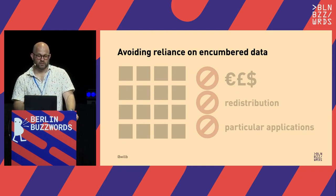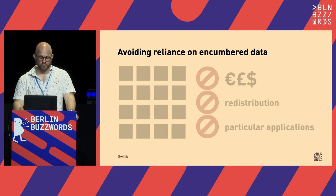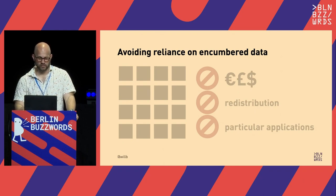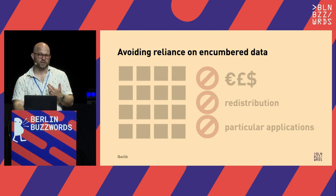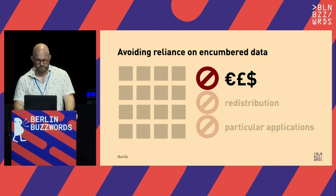Some of these licenses include clauses that can prevent us from teaching people about data processing or machine learning techniques, or sharing implementations under free and open source software licenses. I want to talk about three kinds of restrictions we might want to work around by generating synthetic data that are similarly useful.